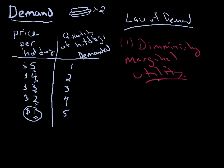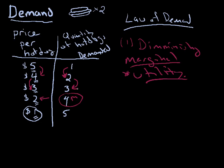Diminishing marginal utility is very important to understanding supply and demand in markets. As I add an extra unit — going from one hot dog to two — my satisfaction, my utility, goes down, so I'm willing to spend less, from $5 to $4. The same happens from two to three, and I'm willing to spend less, from $4 to $3. For the fourth hot dog, I'm only willing to spend $2. Each marginal hot dog is worth less to me because my utility is going down.